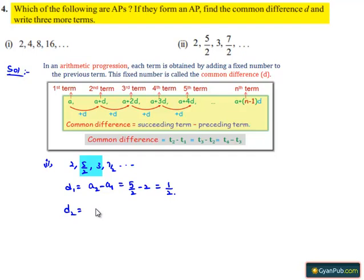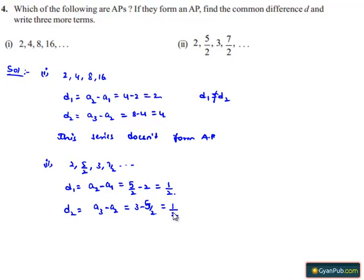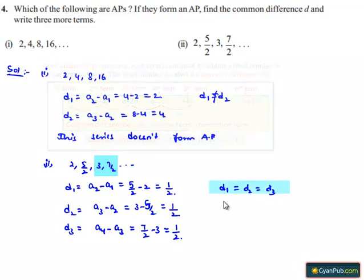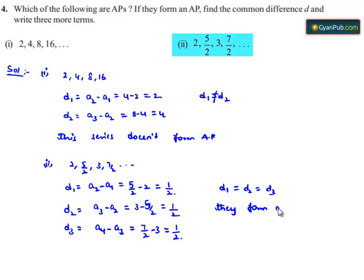Let d2 be the difference between the third and second term, that is a3 minus a2, which is equal to 3 minus 5/2. Taking LCM 2, that is 6 minus 5 by 2, which is 1/2. And let d3 be the difference between the fourth and third term, that is 7/2 minus 3. Taking LCM 2, that is also 1/2. Therefore, d1 equals d2 equals d3, meaning the common difference between any two consecutive terms is equal, and the given series forms an arithmetic progression.